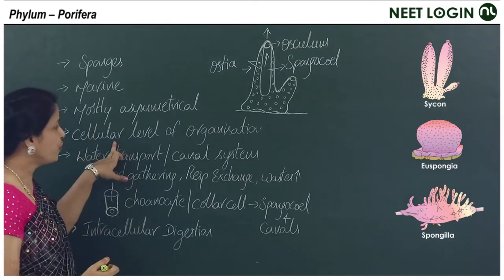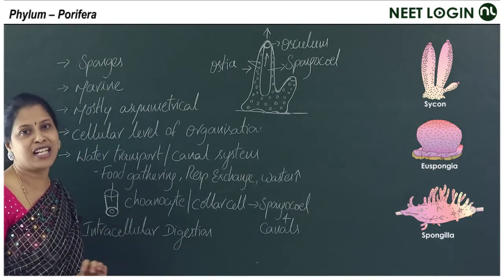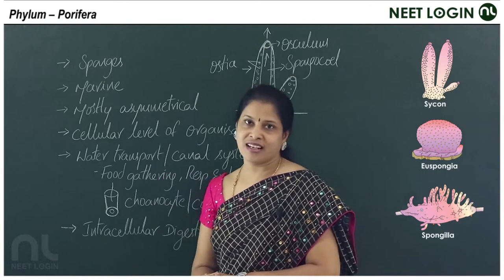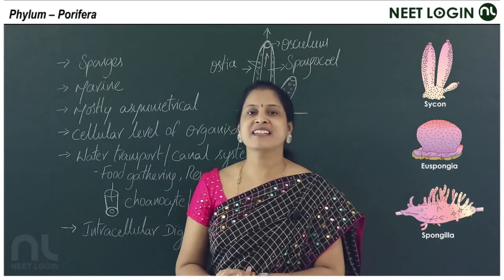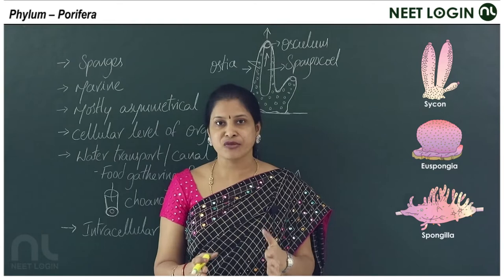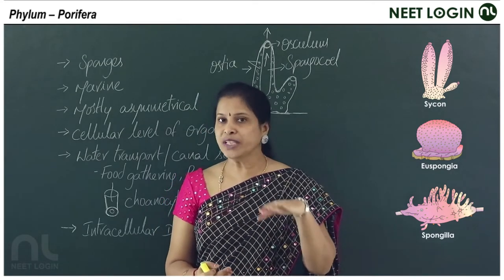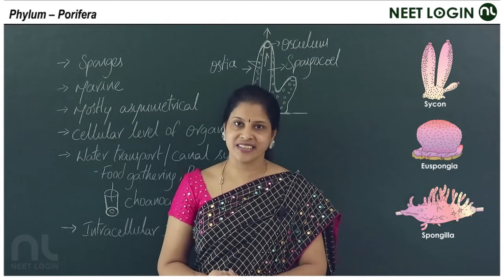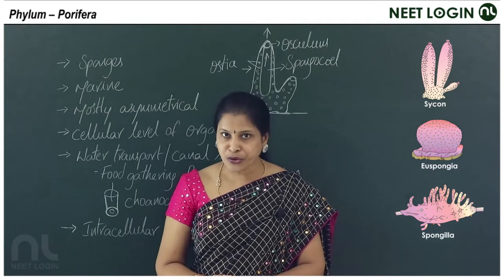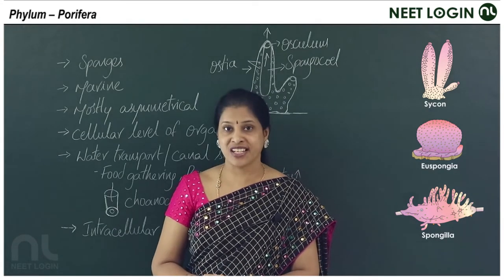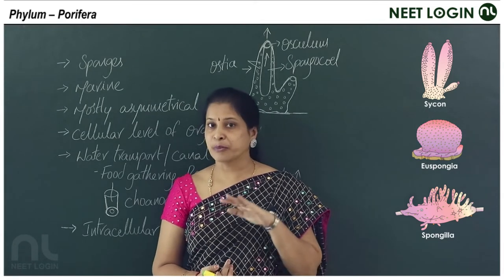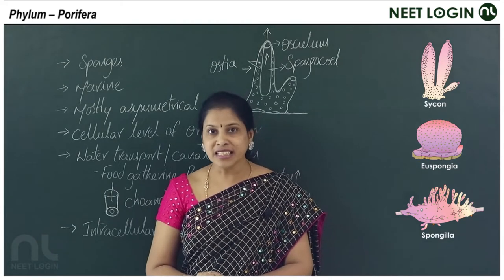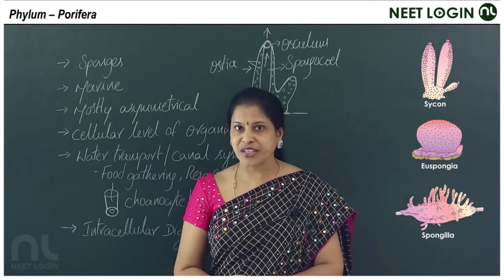The level of organization in these animals is the cellular level of organization. No animal is unicellular — all animals are multicellular. Though their body is made up of many cells, the cells are loose aggregates. This very primitive cellular level of organization is seen in these earliest metazoans, the poriferans or sponges.